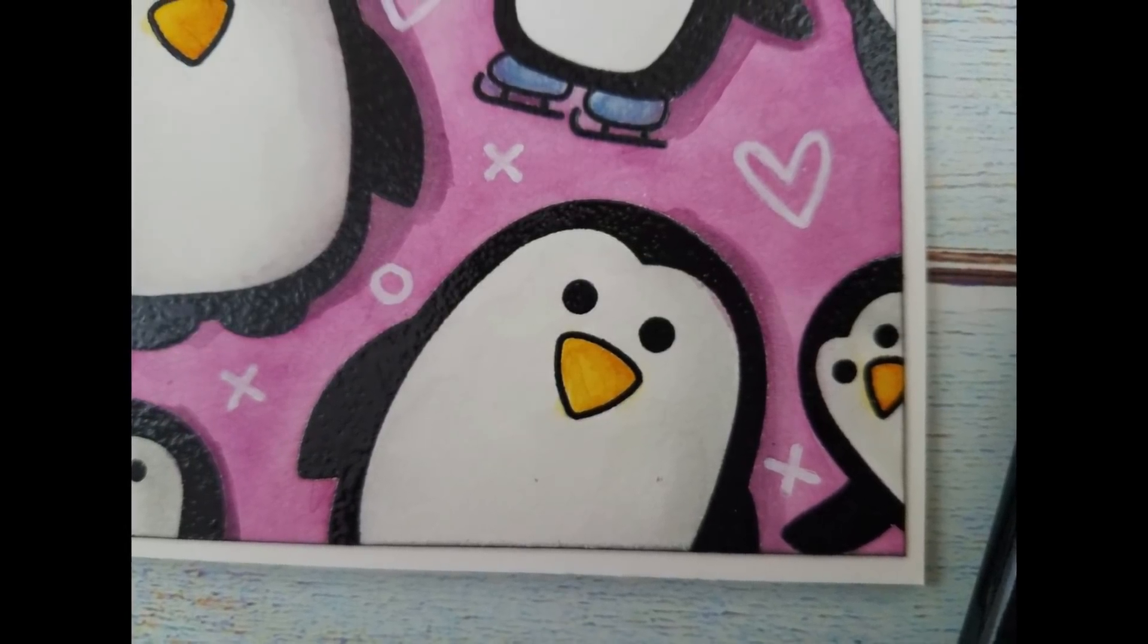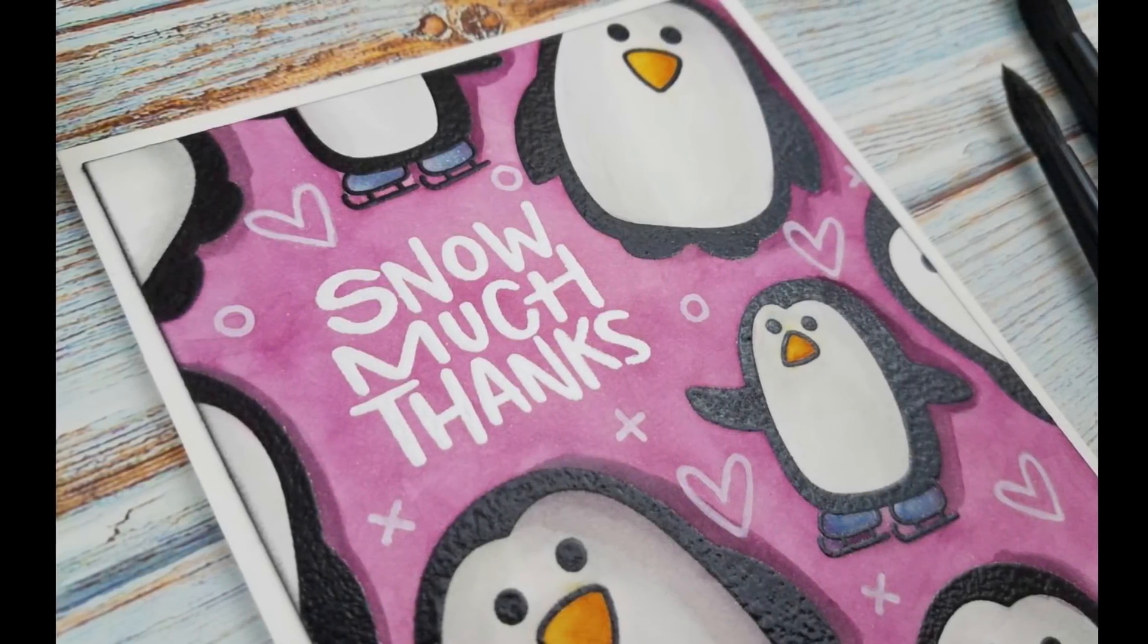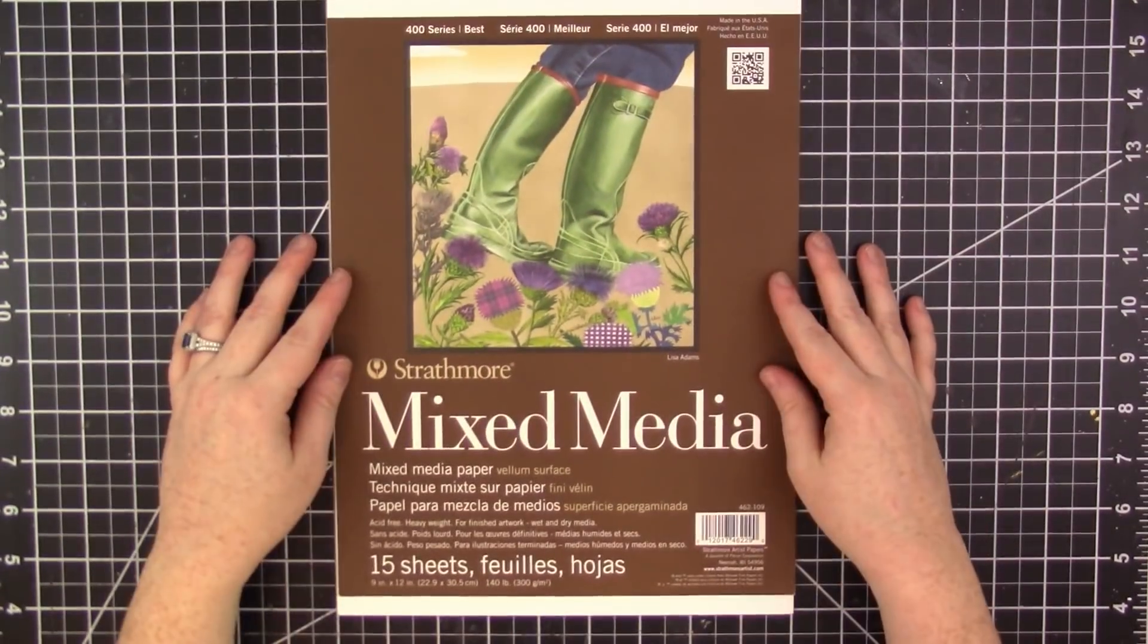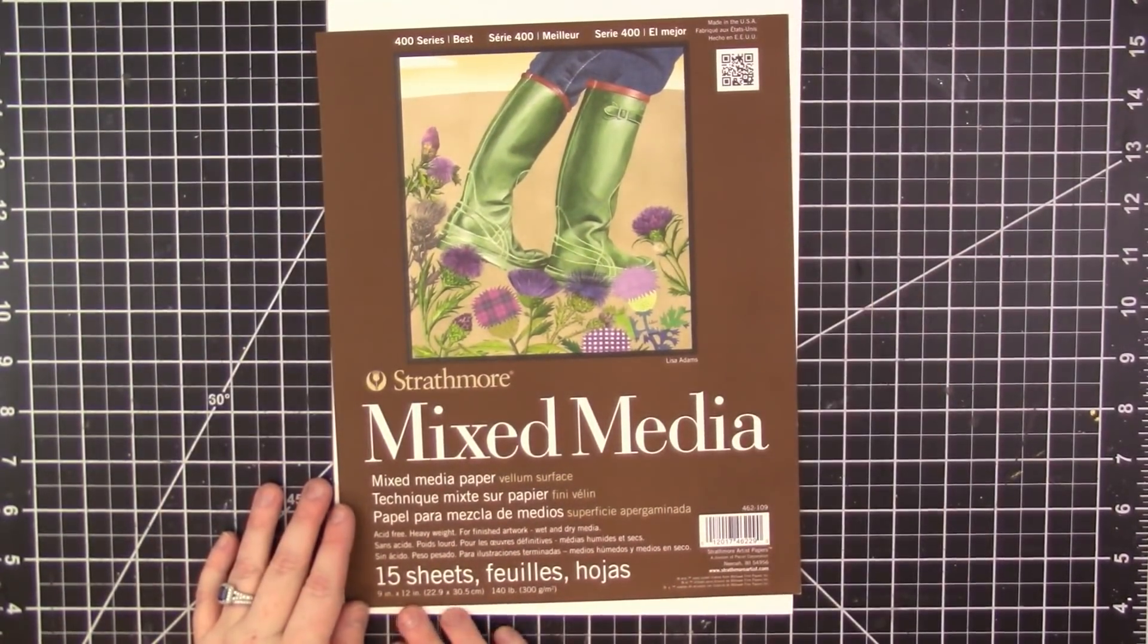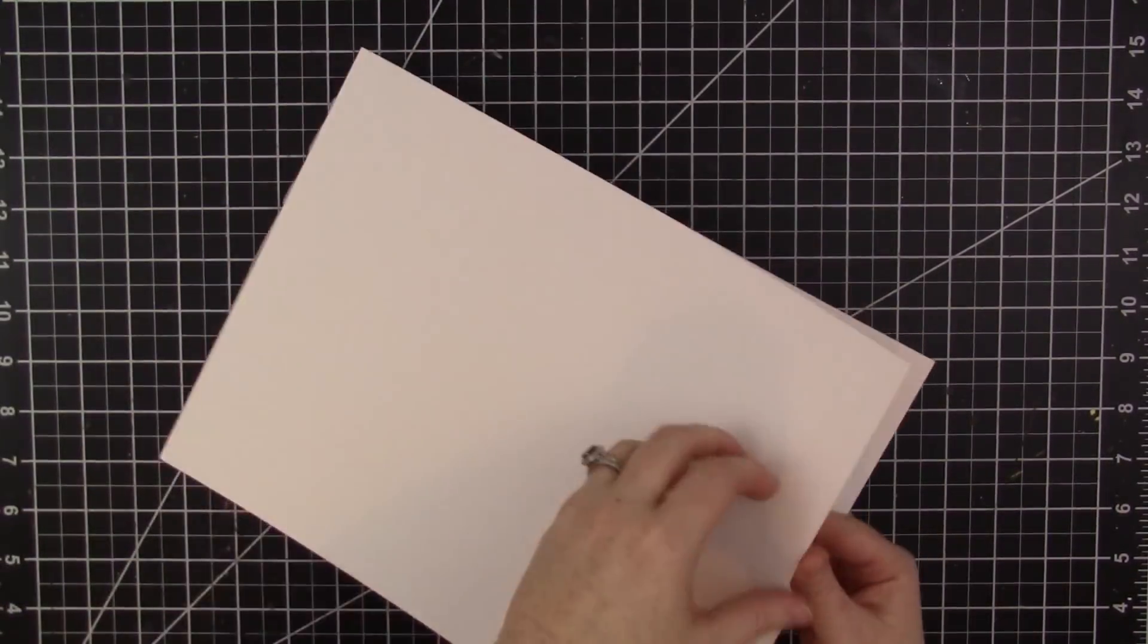I'm making a thank you card using the Snow Much stamp set from Simon Says Stamp's January card kit. I'm gonna start off by using some Strathmore vellum surface mixed media paper. I have it in a 9 by 12 inch pad.